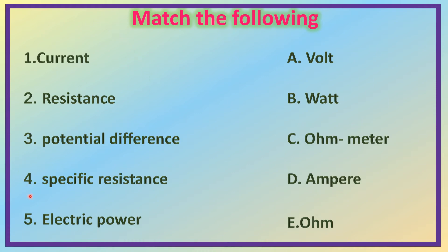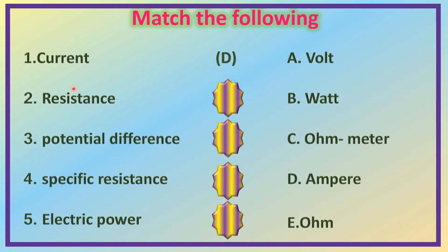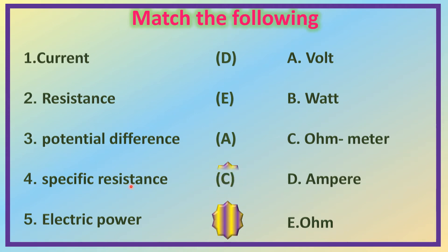See this matching. You will match the units of current, resistance, potential difference, specific resistance, and electric power. The unit of current is D — Ampere. The unit of resistance is E — Ohm. The unit of potential difference is A — Volt. The unit of specific resistance is C — Ohm meter. And electric power is B — Watt.